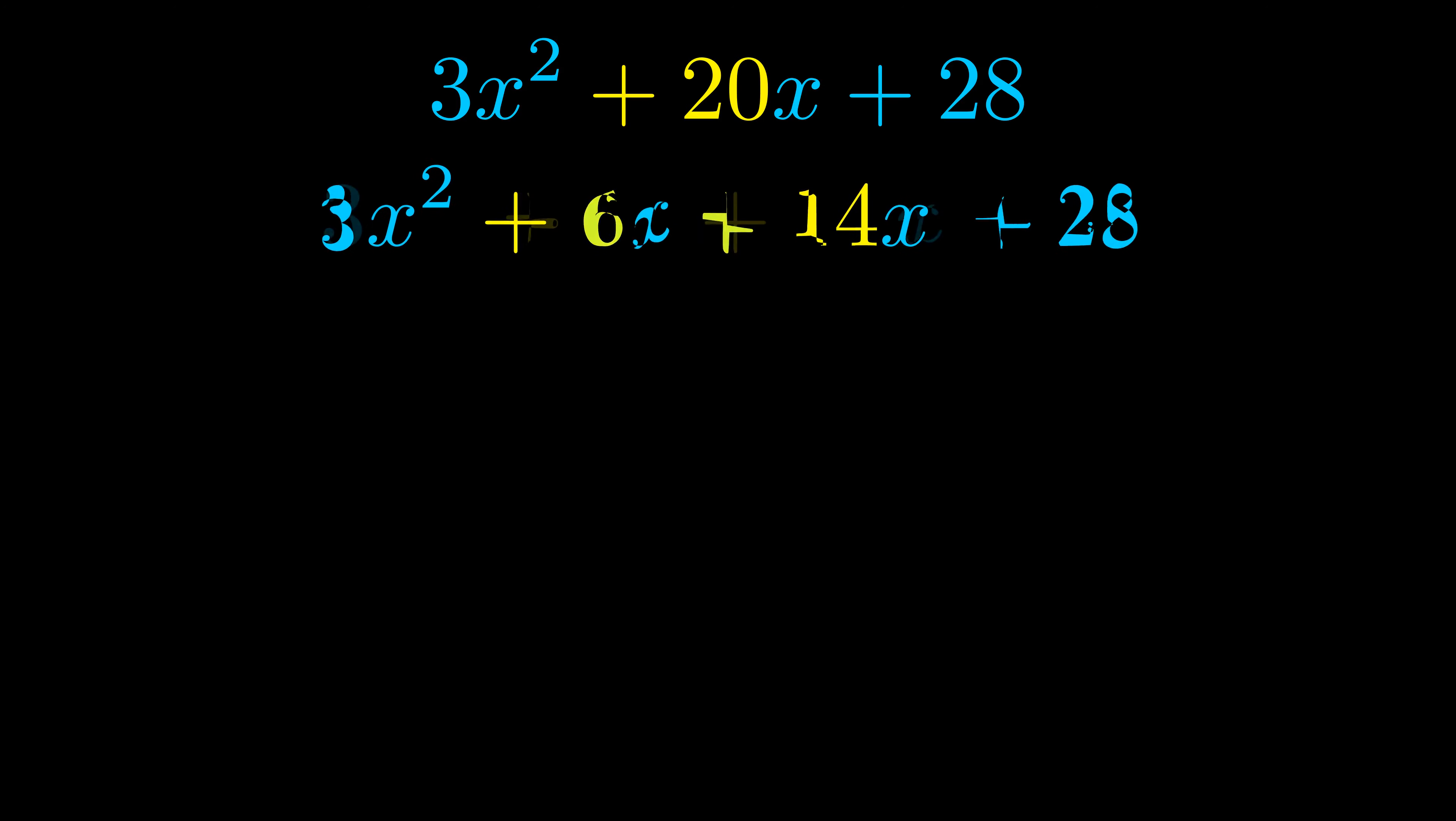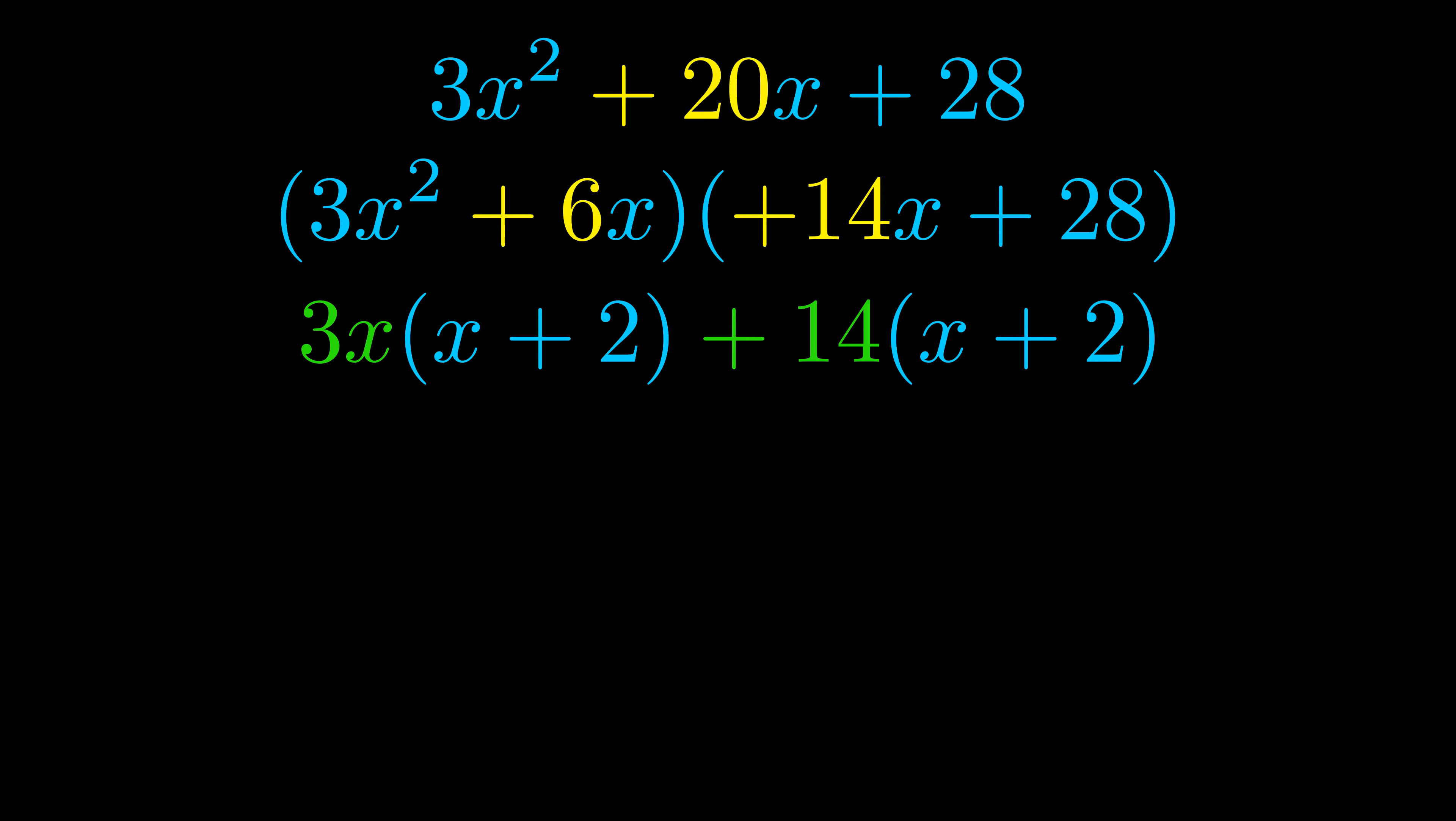Once we've done this we go ahead and we put parentheses around the first term and the last term and we do that so that we can take the greatest common factor out of both terms. We can see the greatest common factor is now outside in green. Notice also how what remains inside of the parentheses is the same in both cases. The blue values are the same.